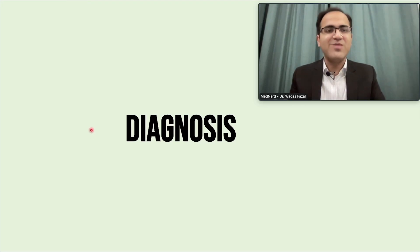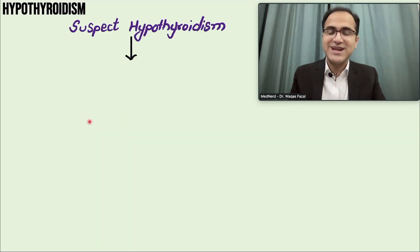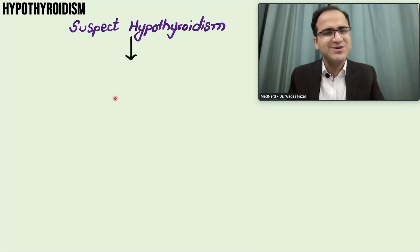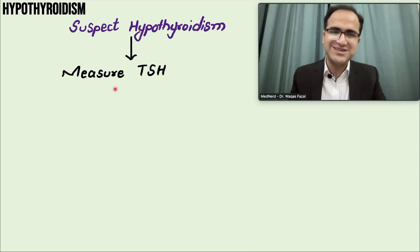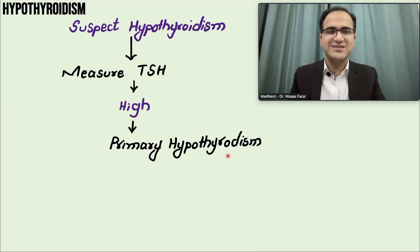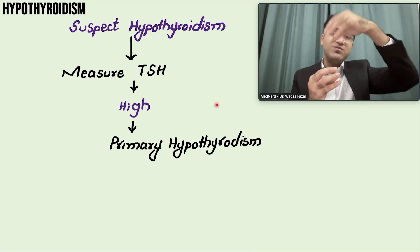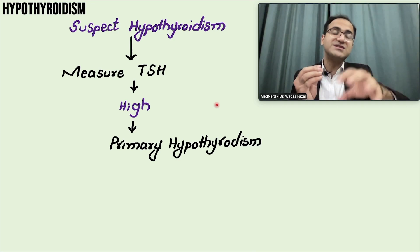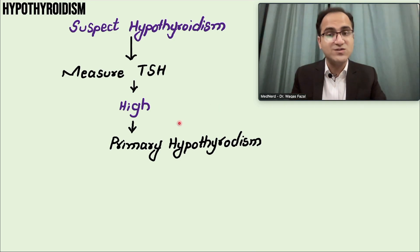Now coming to the diagnosis of hypothyroidism. The first and foremost thing whenever you suspect hypothyroidism — the most initial and the most sensitive test — is measuring the TSH level. You check the TSH levels in these patients and the TSH levels are high. It means that the patient is having primary hypothyroidism because there is a problem with the thyroid gland, and therefore the TSH is increased from the pituitary gland to try to stimulate the thyroid gland to produce thyroid hormones. Primary hypothyroidism is the most common.